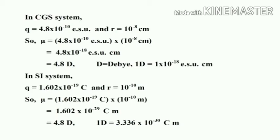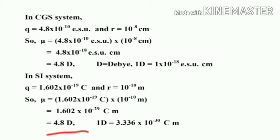Similarly, in the SI system, q = 1.602 × 10⁻¹⁹ Coulomb and r = 10⁻¹⁰ meter. Therefore, mu = 1.602 × 10⁻¹⁹ × 10⁻¹⁰ = 1.602 × 10⁻²⁹ Coulomb·meter, which equals 4.8 Debye, where 1 Debye = 3.336 × 10⁻³⁰ Coulomb·meter.